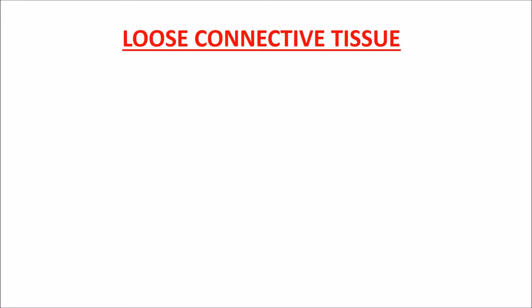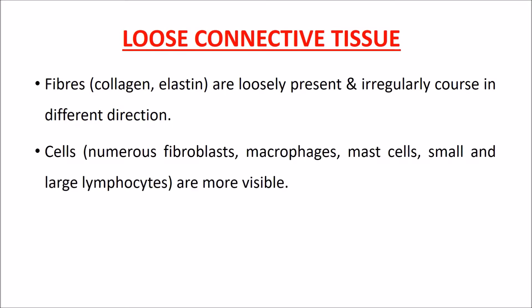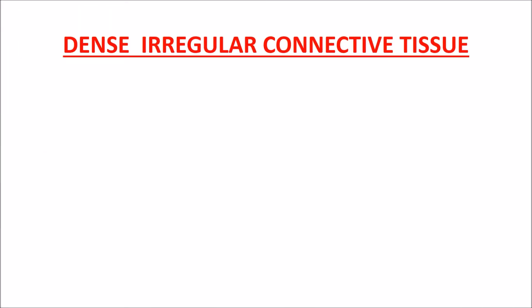Loose connective tissue: fibers such as collagen and elastin are loosely present and irregularly course in different directions. Cells, which consist of numerous fibroblasts, macrophages, mast cells, and small and large lymphocytes, are more visible. Examples include mesentery and embryonic connective tissue.